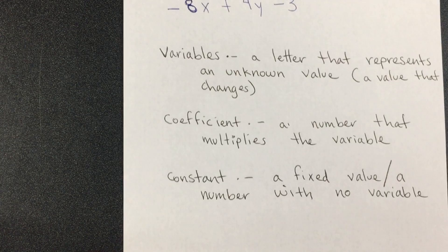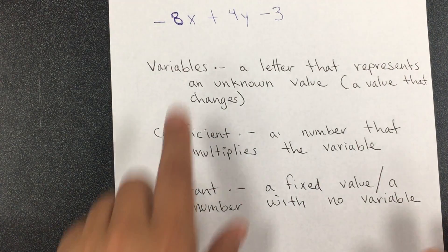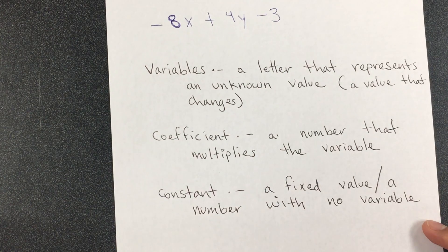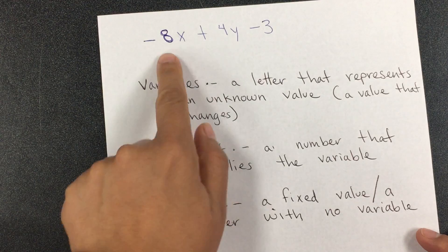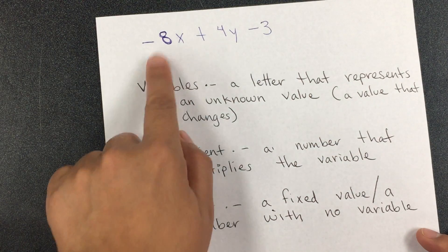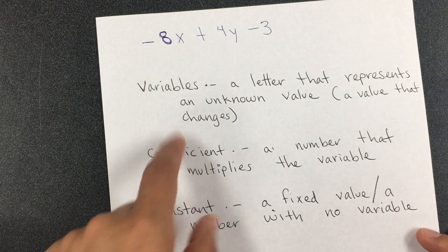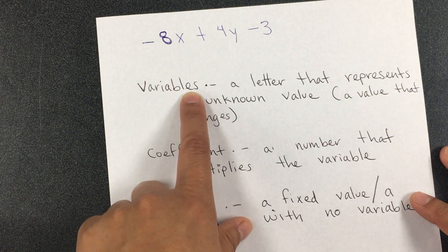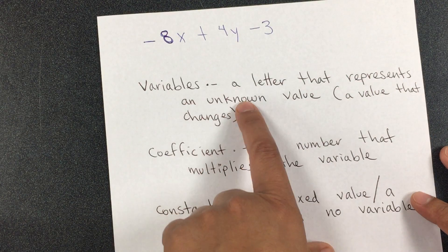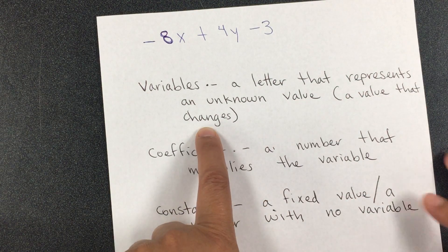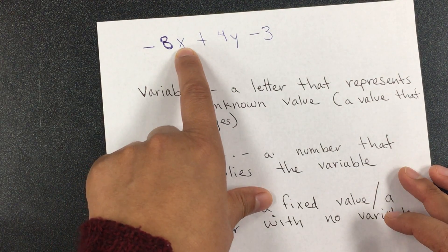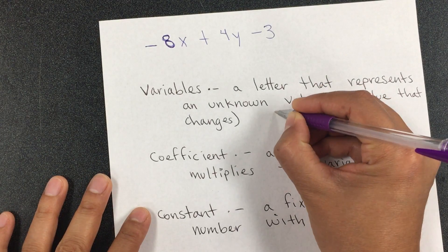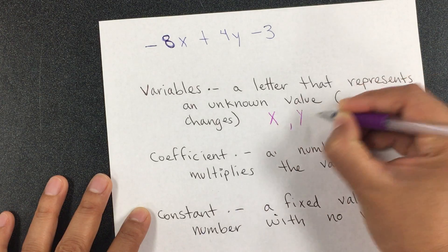Before we start with scenarios, let me define some things. We have this polynomial — it's actually a trinomial because it has three terms. From here we'll select these definitions. The first one is variables: a letter that represents an unknown value, a value that changes. In this expression, the variables are x and y.